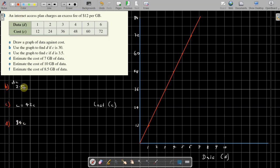Part f: 10 gig, that's off the scale. But since it's 12 for one, I'm going to go with a dollar 20, so that's 120 cents.